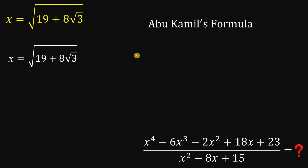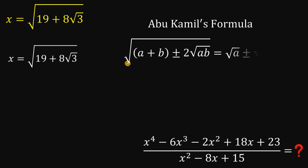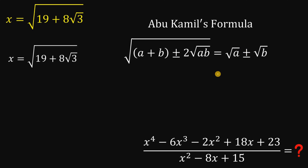Here is how it works. If we have a pattern — square root of the quantity A plus B, plus or minus 2 times the square root of AB — this is equivalent to the square root of A plus or minus the square root of B, provided that A is greater than B.